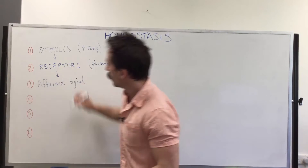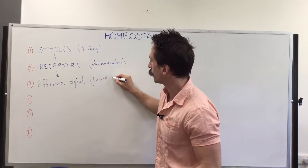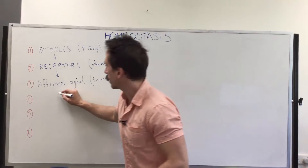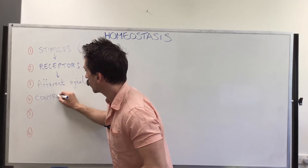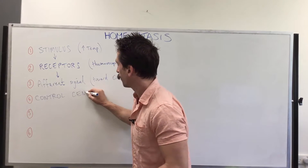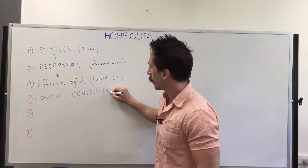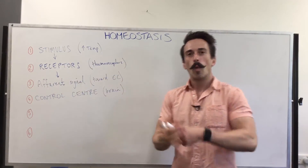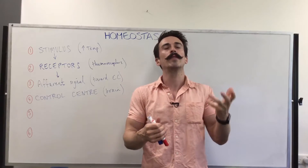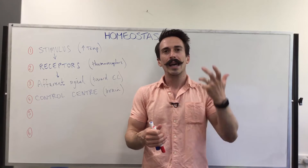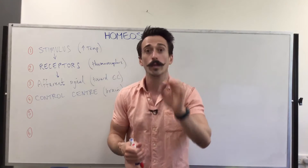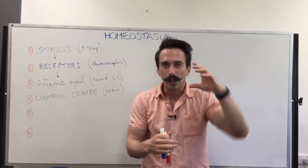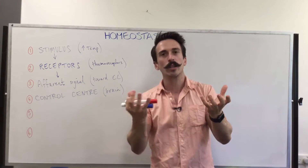The afferent signal is going toward the control center — I'll write CC for control center. Once that afferent signal gets to the control center, which in this case is the brain, the brain takes this information from the receptors. It evaluates the information and says: I've received information from the thermoreceptors saying it's getting too hot. Then it decides what to do — it's getting too hot, I need to drop the temperature back down.